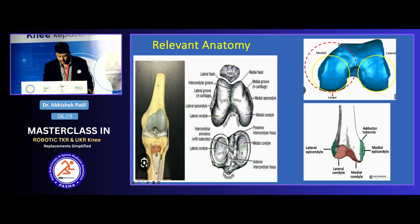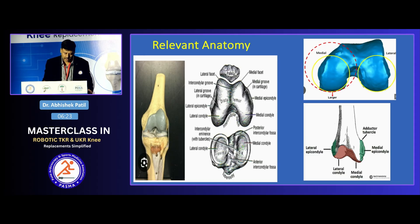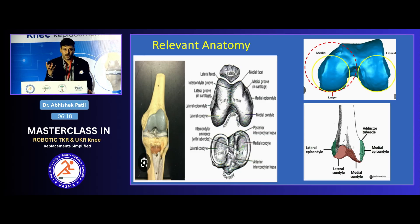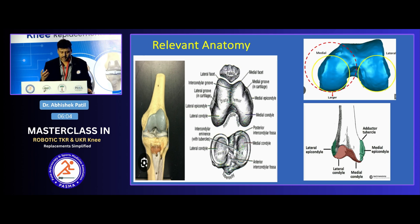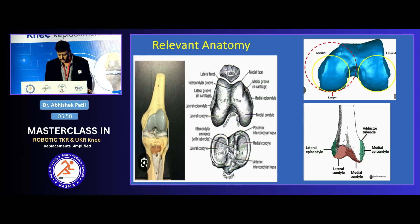In the coronal plane, the medial condyle projects more distally compared to the lateral condyle. Correspondingly, on the tibial side we have a deeper medial condyle to accommodate the larger medial femoral condyle, and a flatter, shallower lateral condyle corresponding to the flat lateral condyle on the femoral side. The medial meniscus is less mobile and more stable, whereas the lateral meniscus is more mobile and allows more freedom of motion.